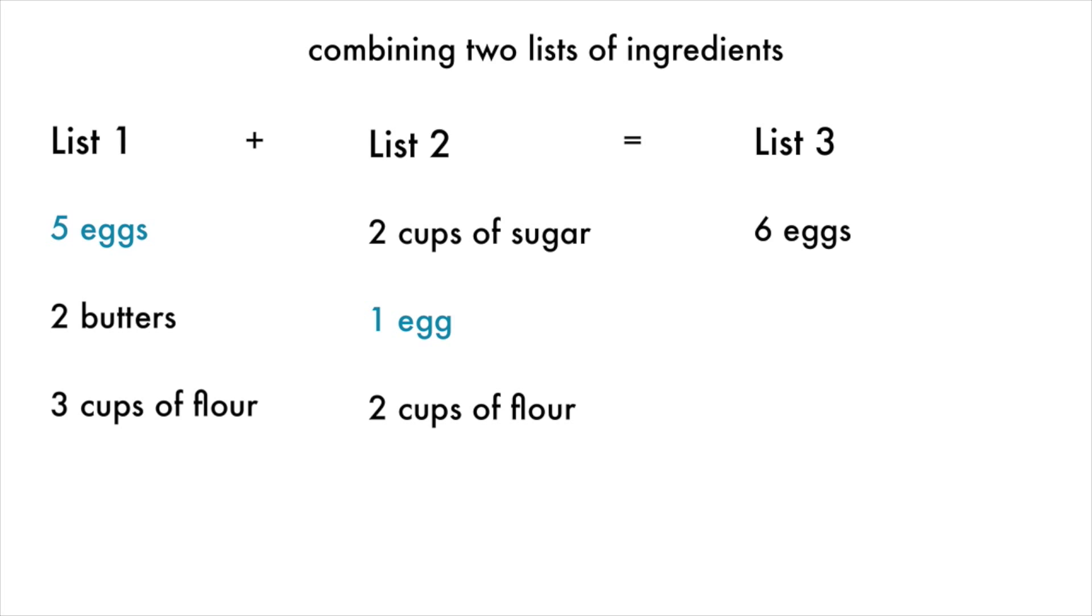Butter is only on the first list, so we copy it directly. Flour is on both lists, so we add them. And sugar is only on the second list, so we copy it directly. That was easy.